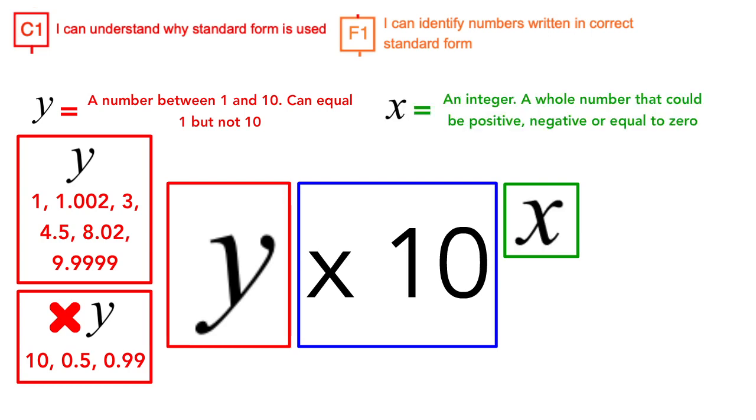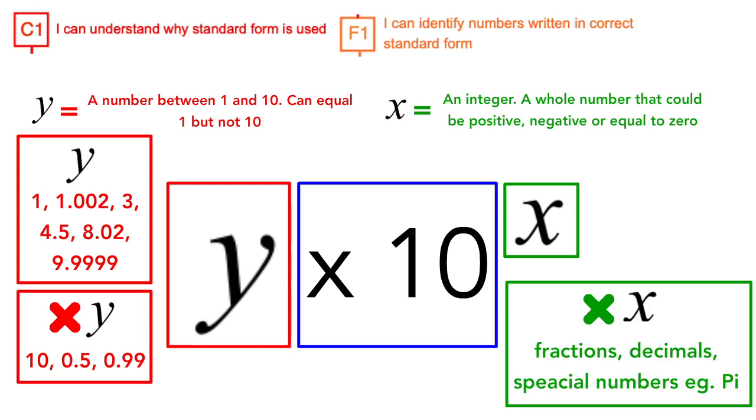This means the power cannot be a fraction, decimal or a number like pi. But the number can be any positive or negative whole number like 2, 5, 9, negative 5 or negative 3.